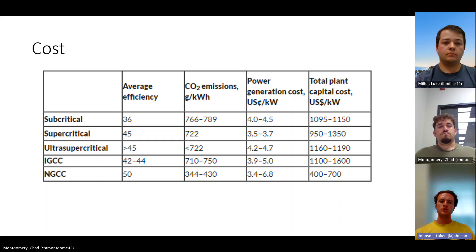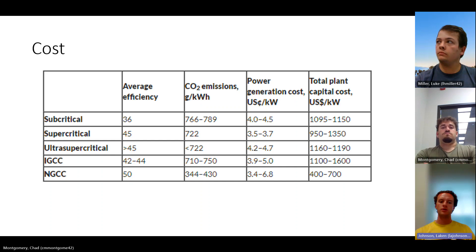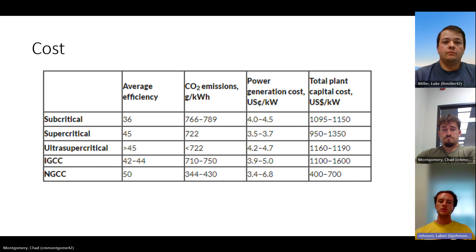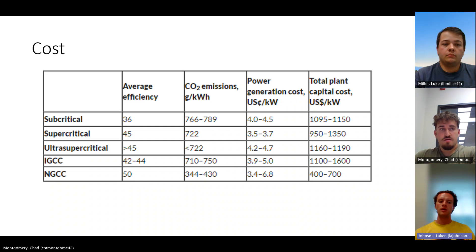The table shows that supercritical power plants have the most effective power generation costs, having a lower cost per kilowatt. Although ultra supercritical power plants have a larger power generation cost compared to subcritical plants, with material and technological advances this gap has been trending downward and will ultimately surpass subcritical costs. Total plant capital cost for supercritical plants has a large range of 950 to 1350 U.S. dollars per kilowatt, but with manufacturing and metallurgic advancements the upper end will trend downward.